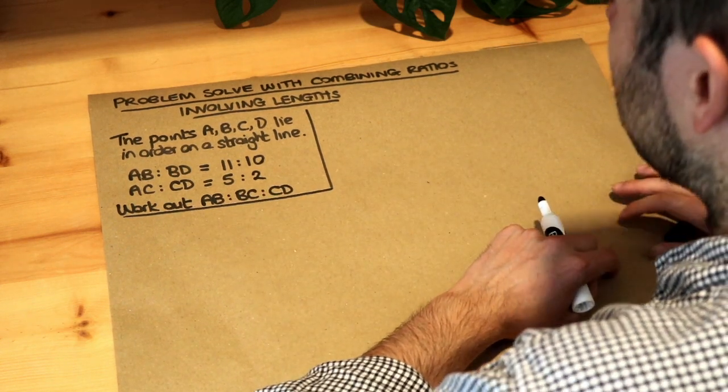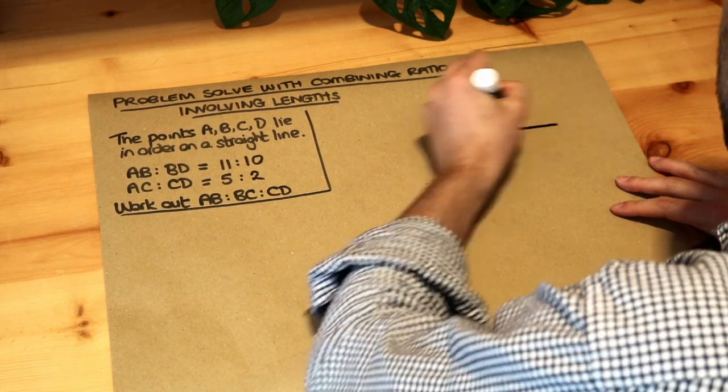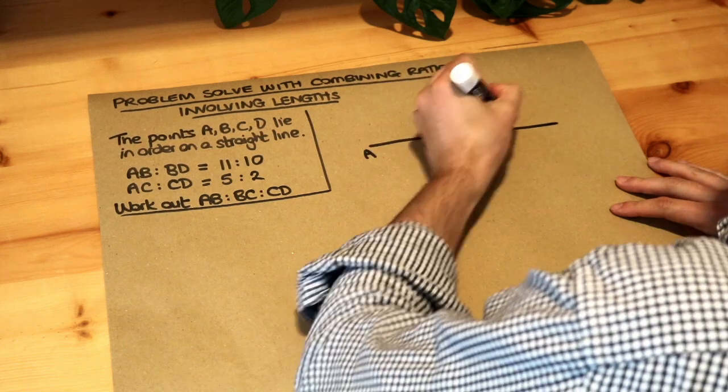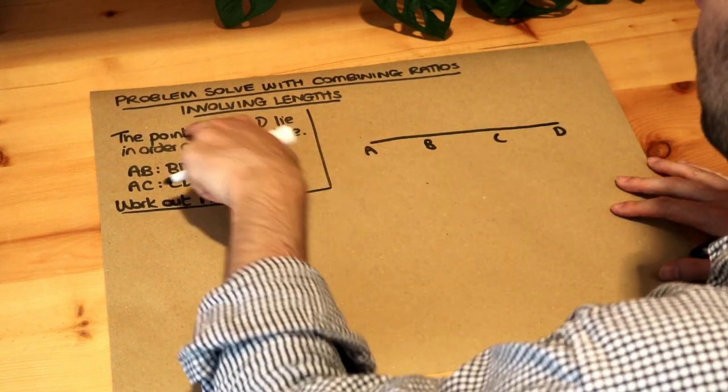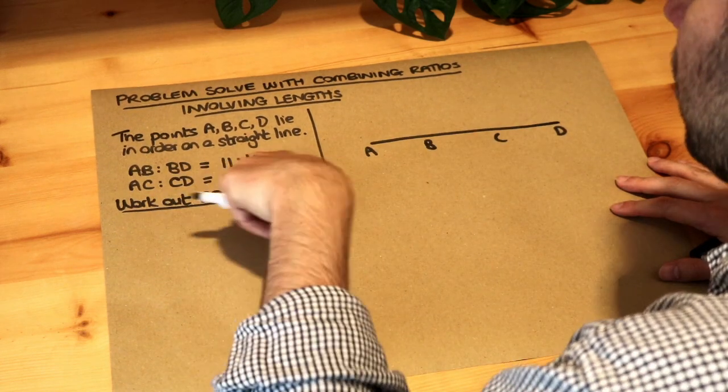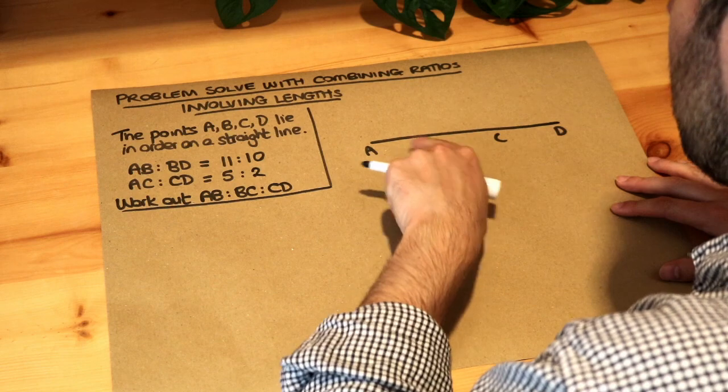Now the best way to do this is to visualize it by drawing a line with A, B, C, and D on it, as per the first line of the question. It doesn't matter that they might not be spaced in the same ratio as these numbers here, but we're going to put the numbers on it.